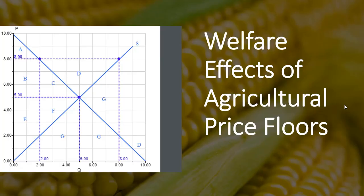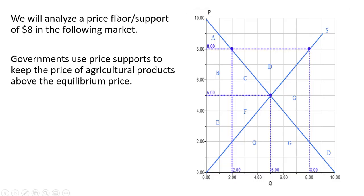Hello, in this video we're going to look at the welfare effects of agricultural price floors. We will analyze a price floor support of $8 in the following market. Governments use price supports to keep the price of agricultural products above the equilibrium price.